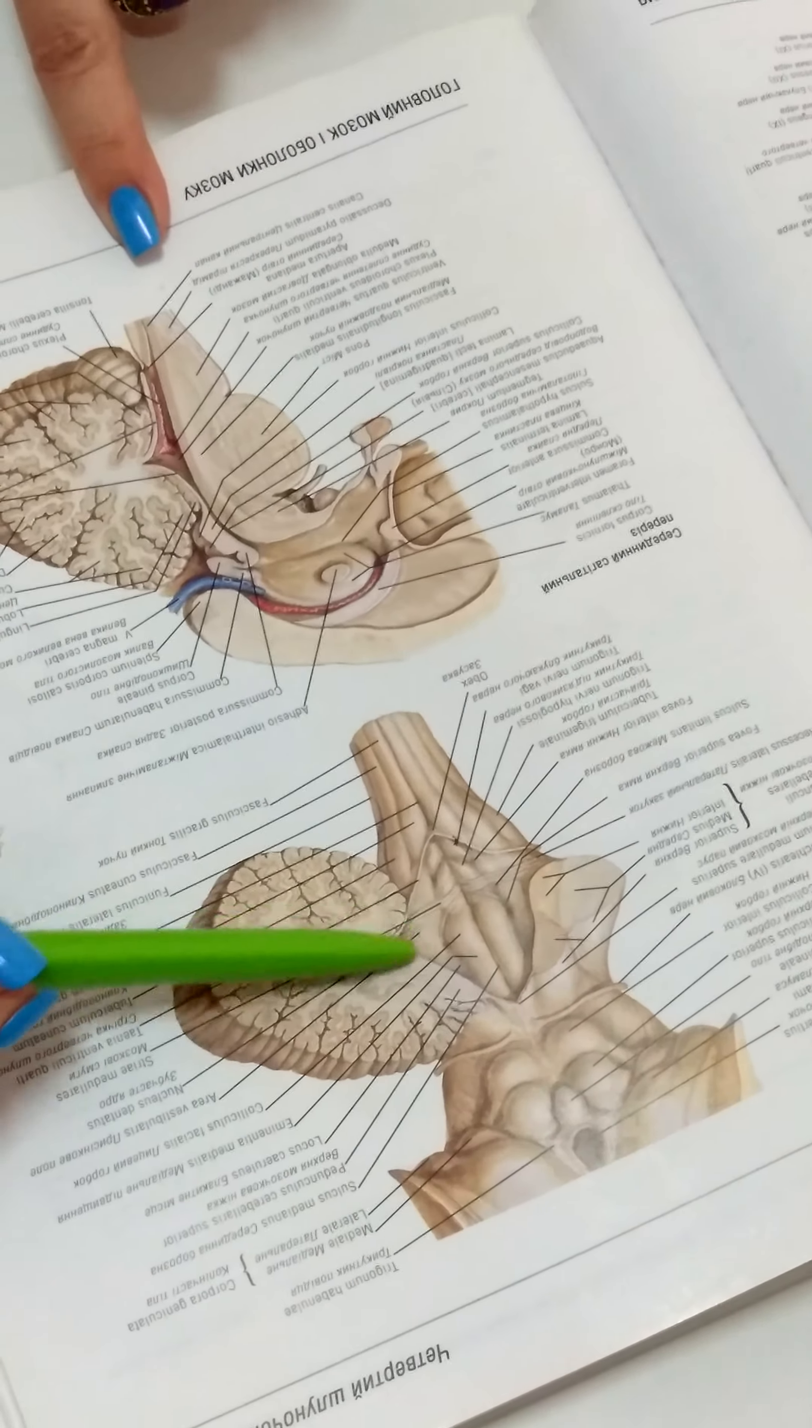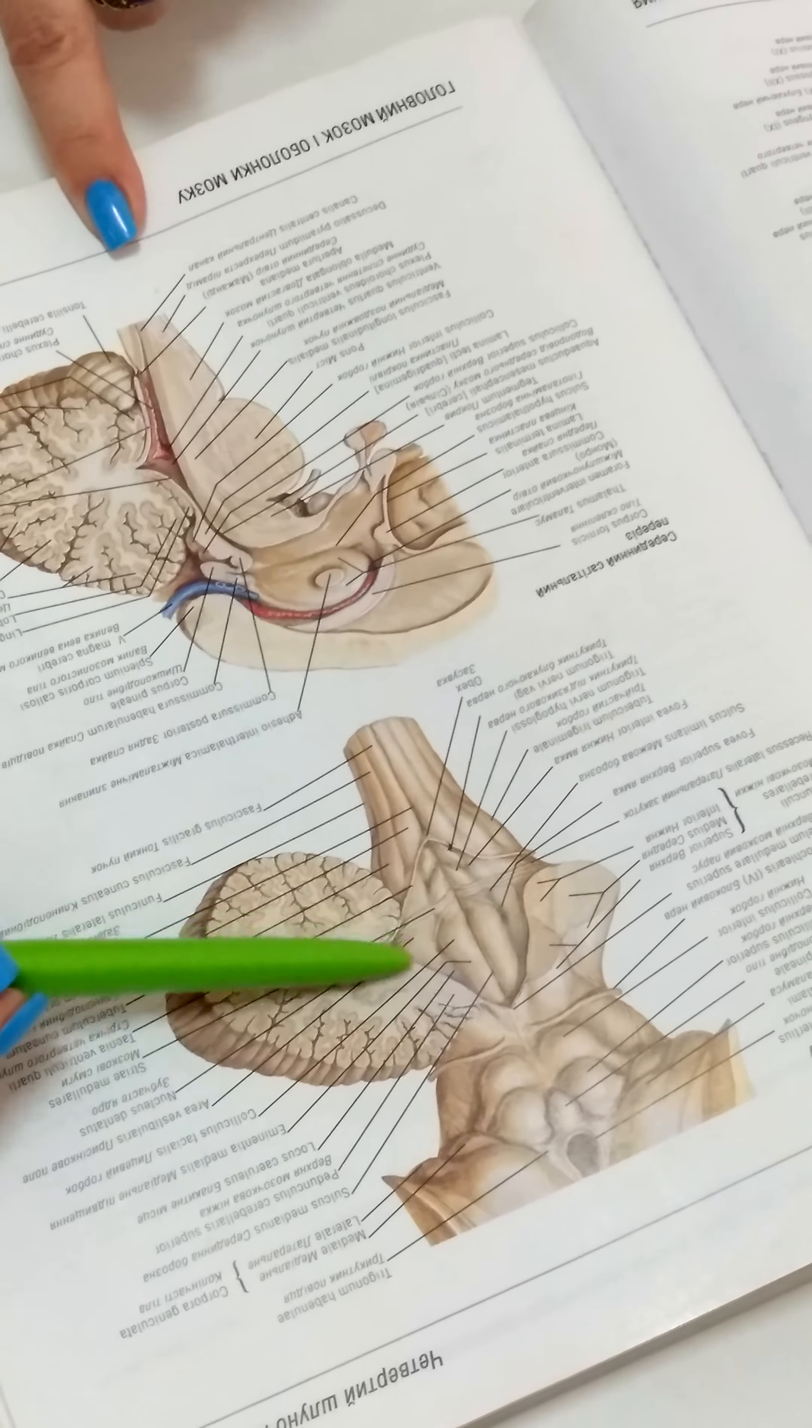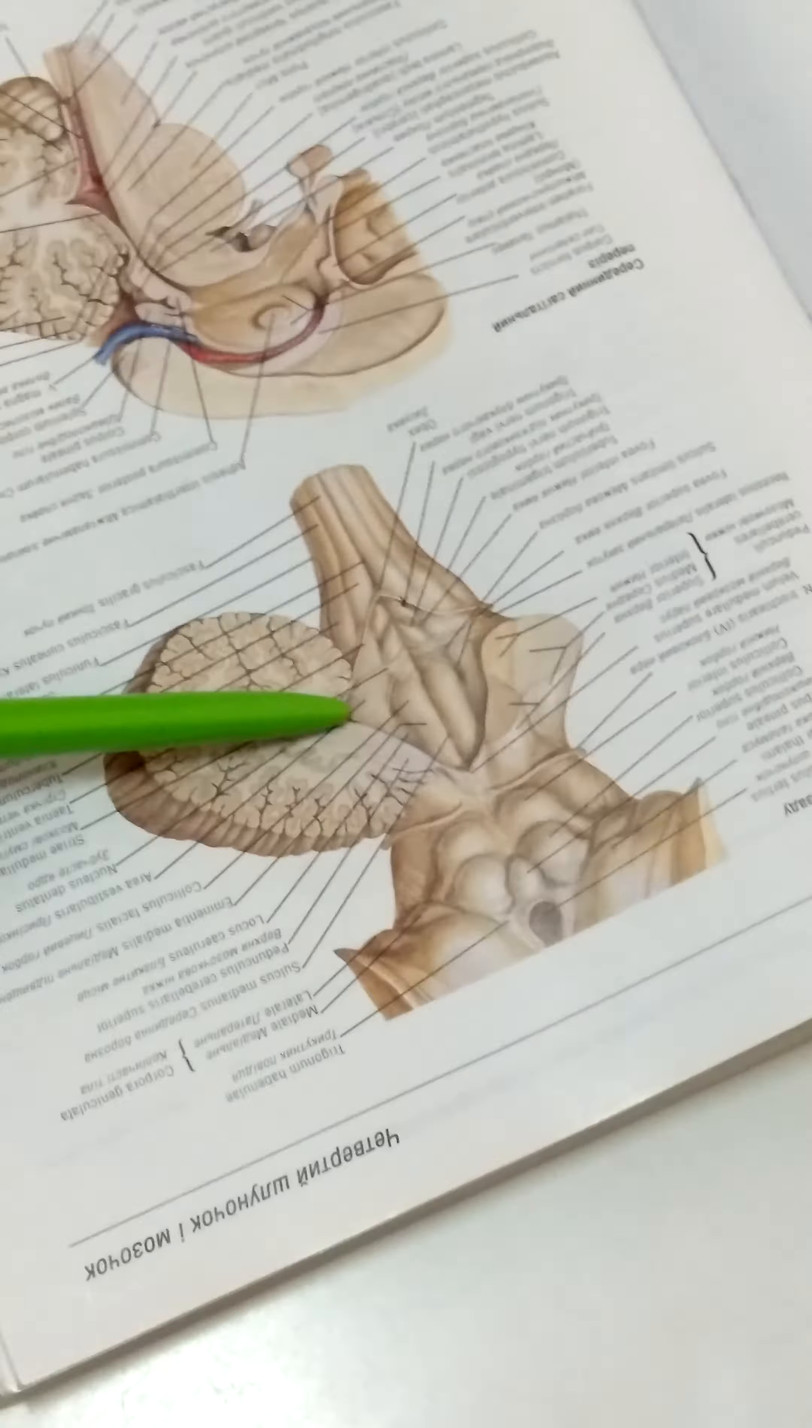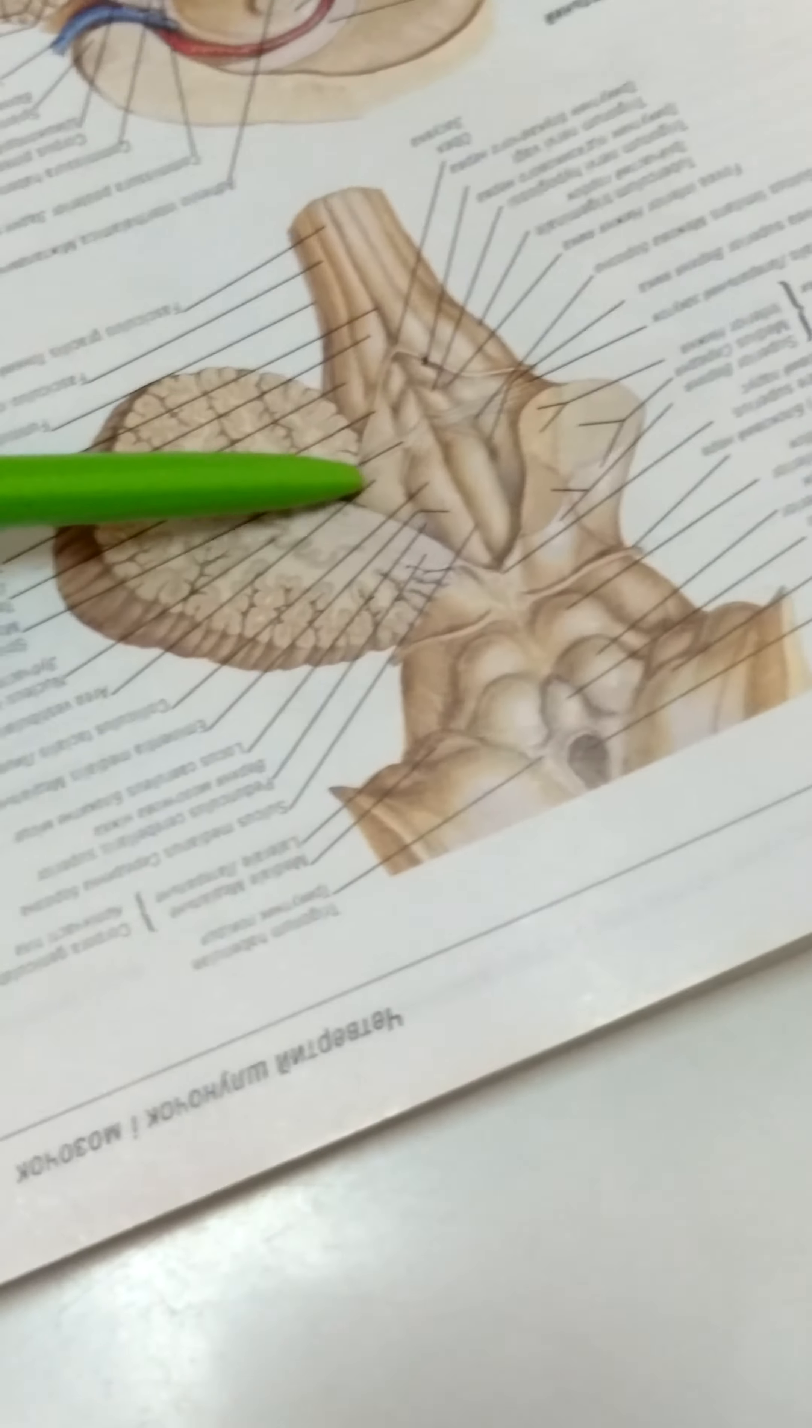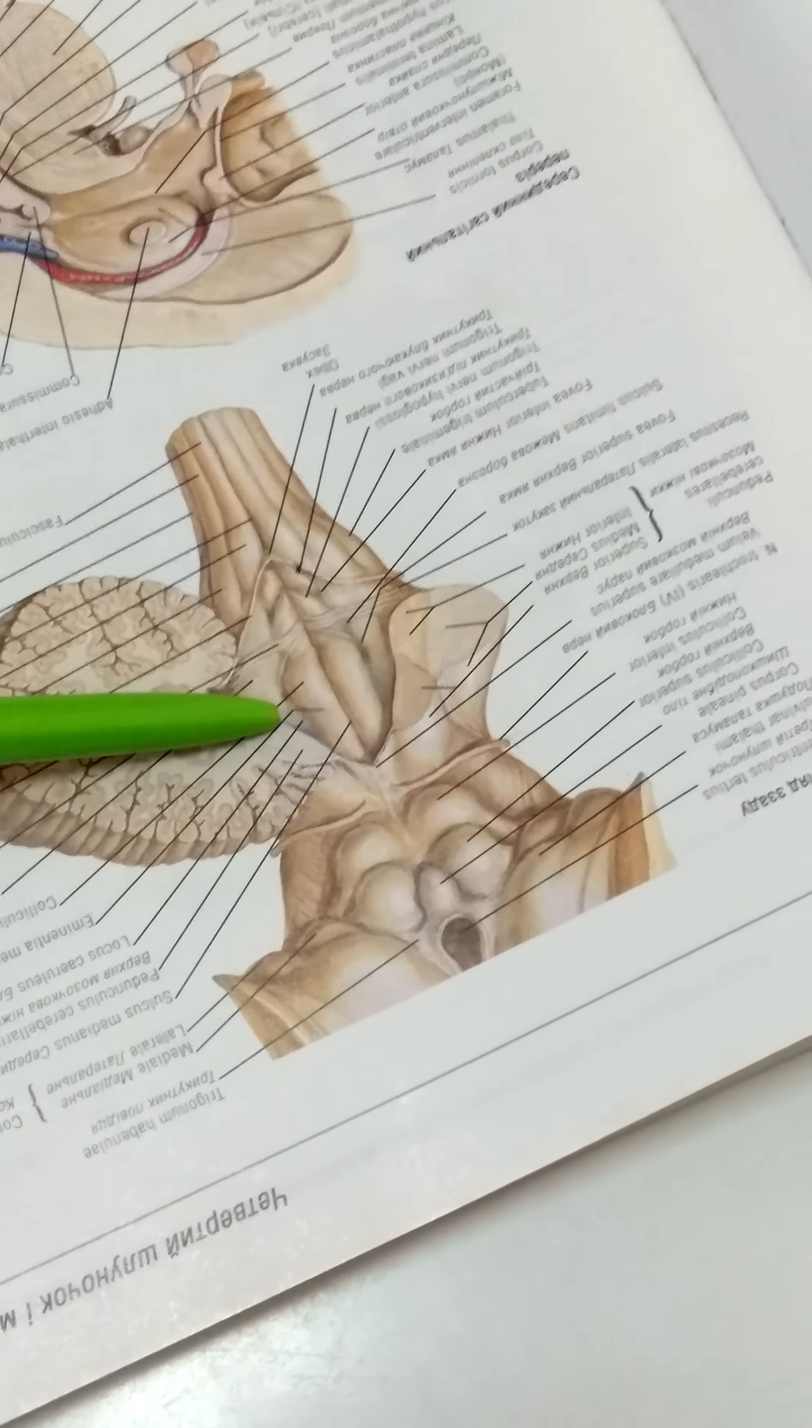The lateral part is called lateral angle or area vestibularis, where vestibular nuclei of the eighth pair of vestibulocochlear nerve are located. This small groove area is called locus ceruleus, the blue point of the rhomboid fossa.